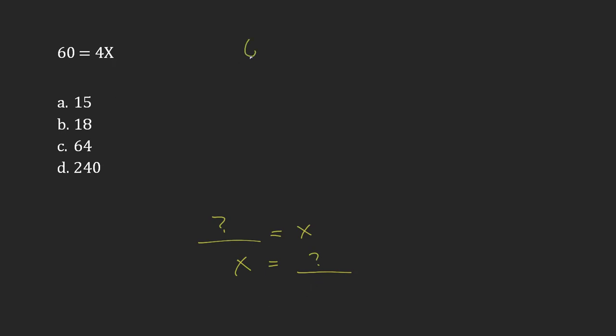Also, I should point out that 60 equals 4 times x is really just the same as saying 60 equals 4x. If there's nothing in between a number and a variable, it's implied that we're multiplying.